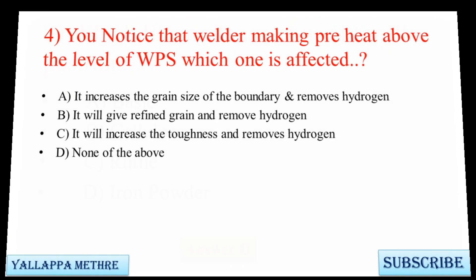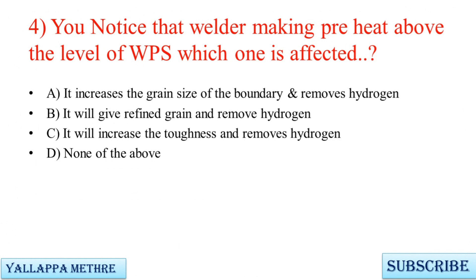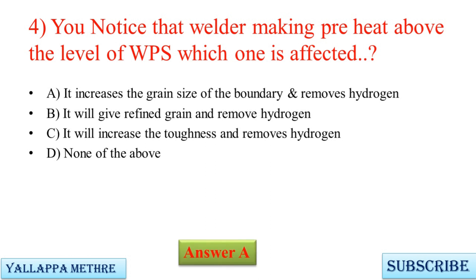Question 4: You notice that a welder is making preheat above the level specified in the WPS. Which of the following is affected? A. It increases the grain size of the boundary and removes hydrogen. B. It will give refined grain and remove hydrogen. C. It will increase the toughness and removes hydrogen. D. None of the above.